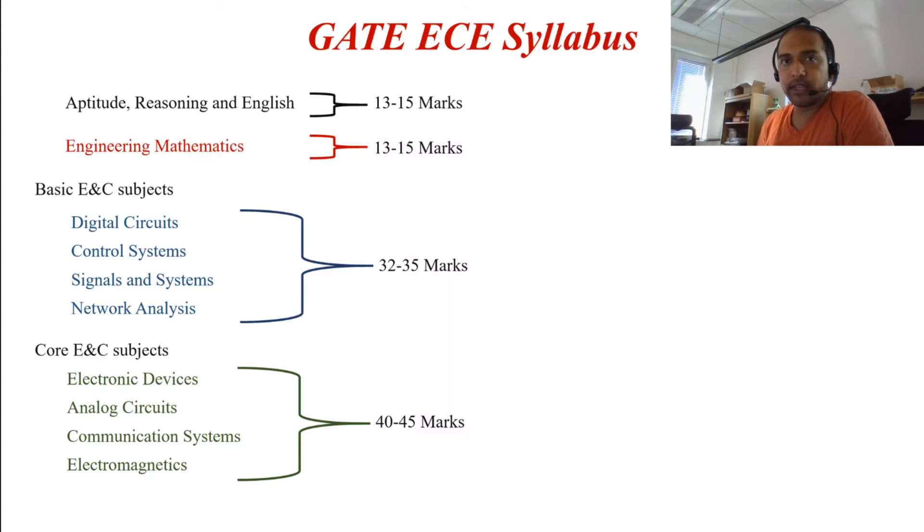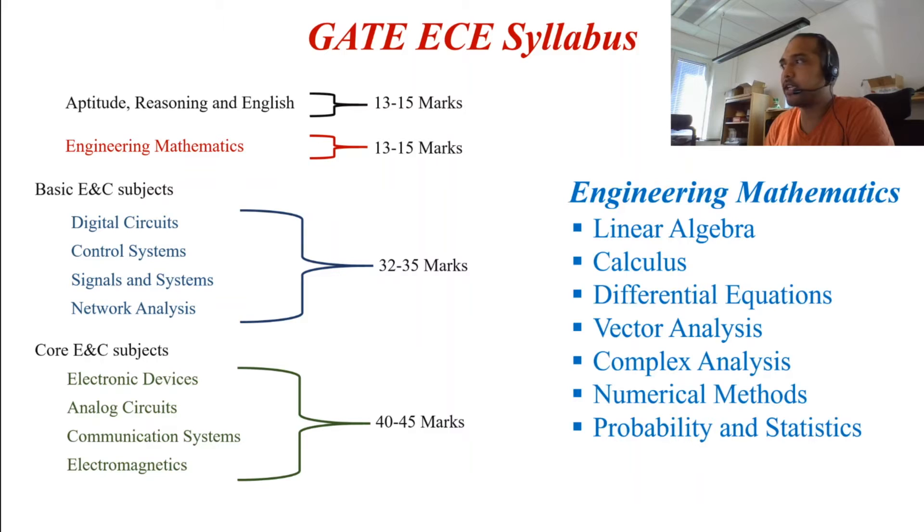Looking at this, you might think the syllabus is quite small but it's not so because the engineering mathematics itself has a lot of topics. For example, the engineering mathematics includes linear algebra, calculus, differential equations, vector analysis, complex analysis, numerical methods and probability and statistics. And also, if you look at the core subjects, for electromagnetics you have electromagnetic waves, transmission lines and wave guides. In communication systems, you have analog systems and digital systems.